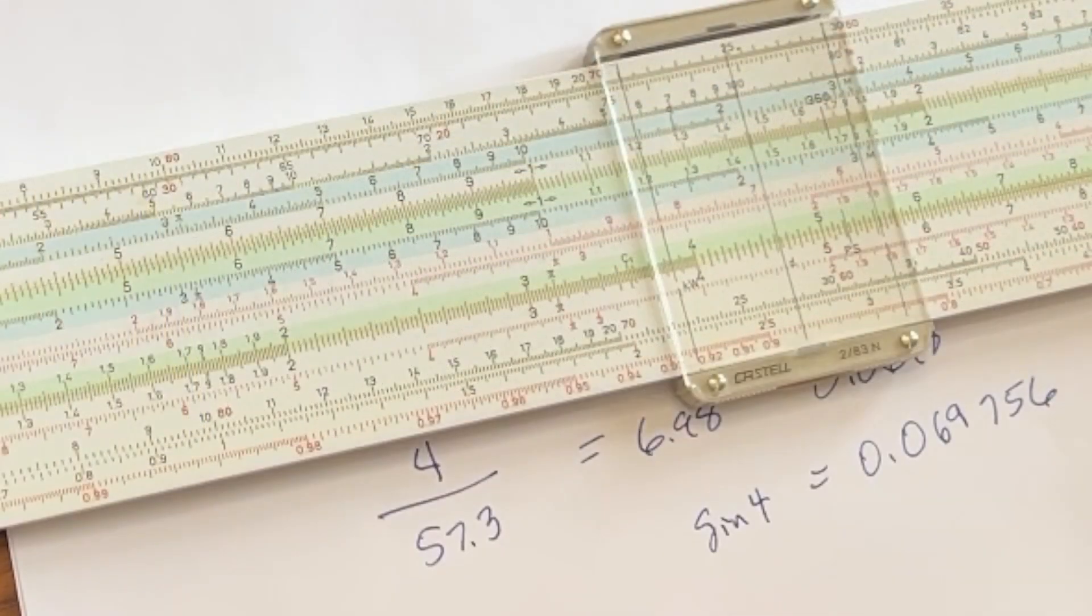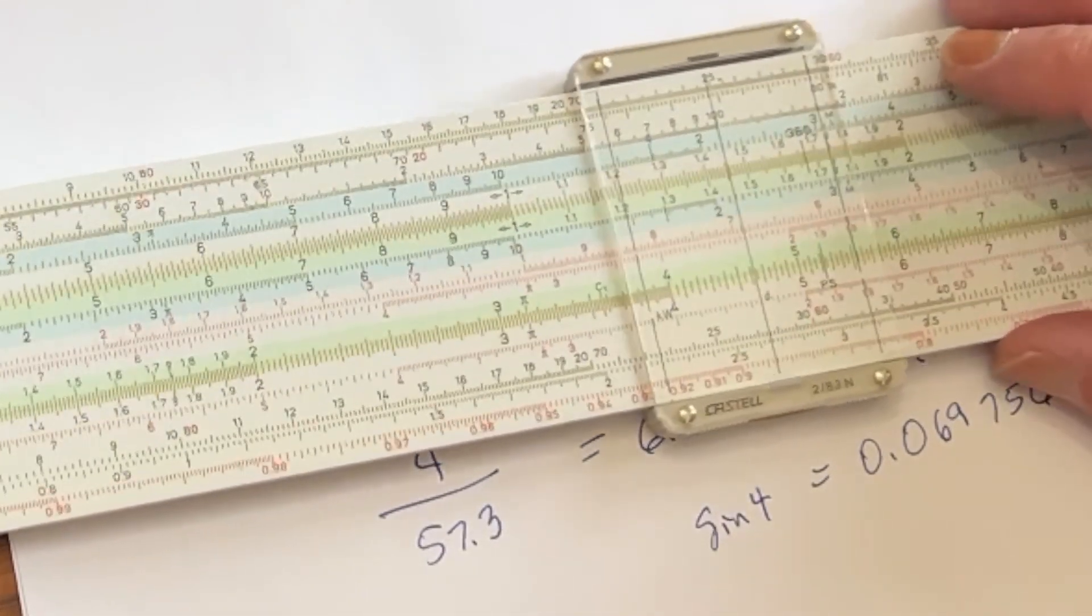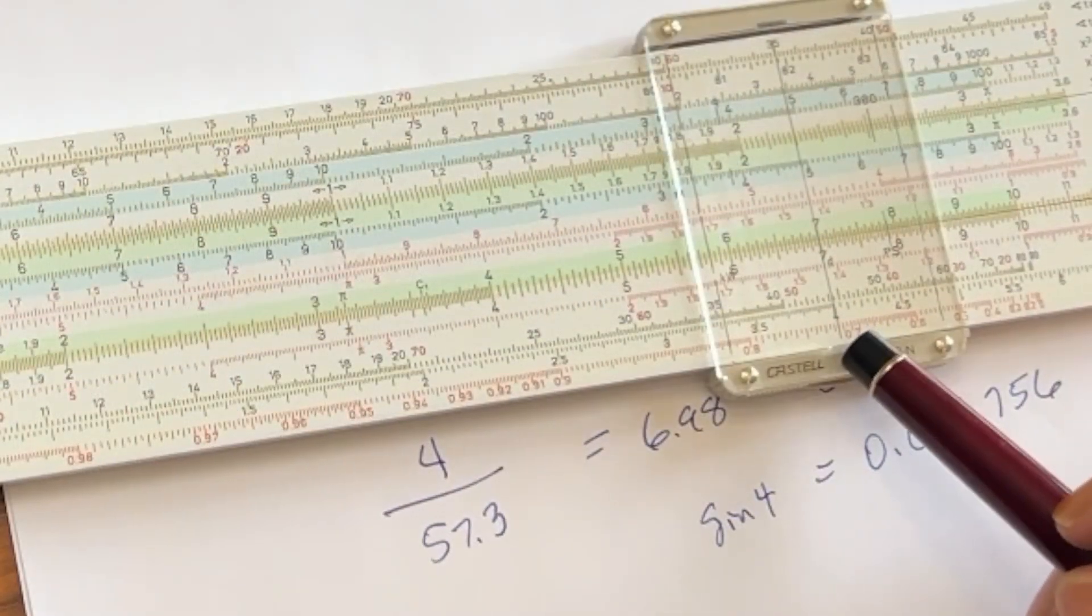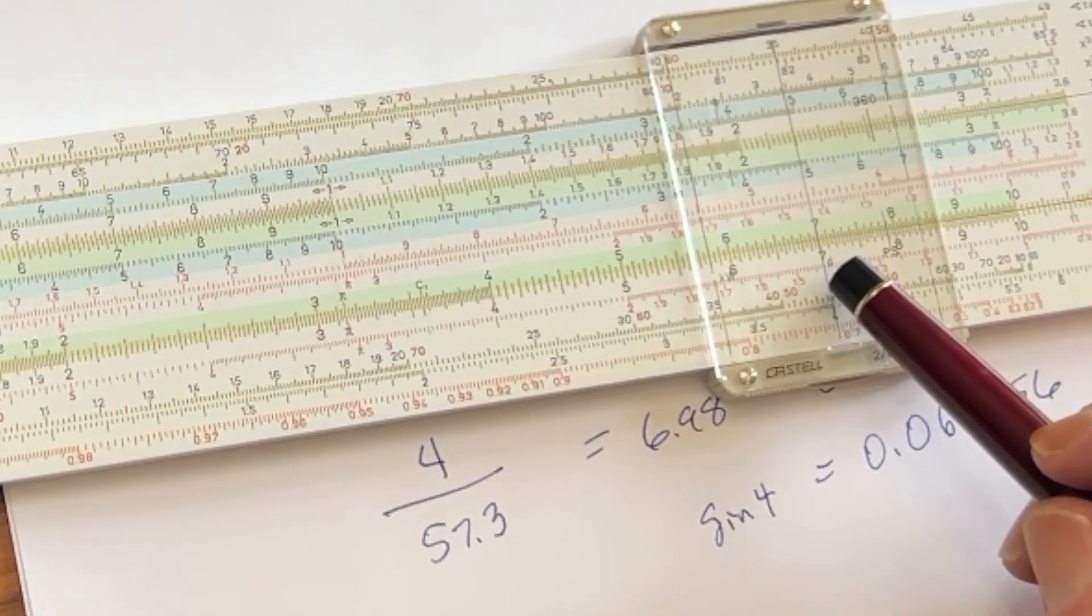So if we want to look at the sine or the tangent of 4 degrees, we just come out to 4 degrees on the ST scale and then read straight up to both the sine and the tangent.